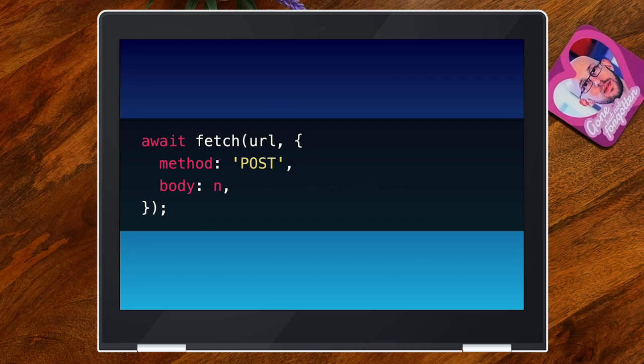Form data is a more interesting one because it's multi-part encoding — it can contain everything a form can contain, including files. And then there's the super basic URL search params. The nice thing about form data is it can take a form object and represent it as multi-part form data. If you want to convert it to URL search params you have to do it yourself — it's like two lines of code. But with all of these formats, you need all of the data upfront ready. You have all the data and then it turns it basically into a binary encoding under the hood, and that's what gets sent with the request.